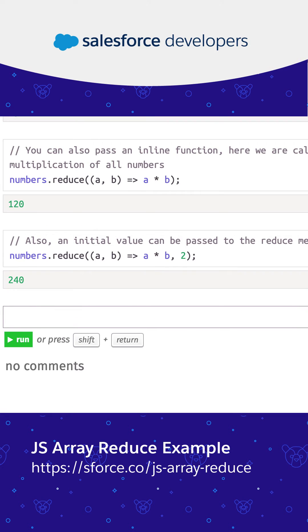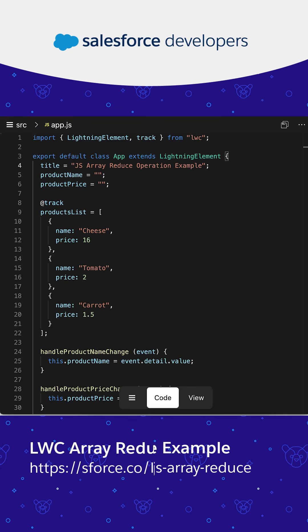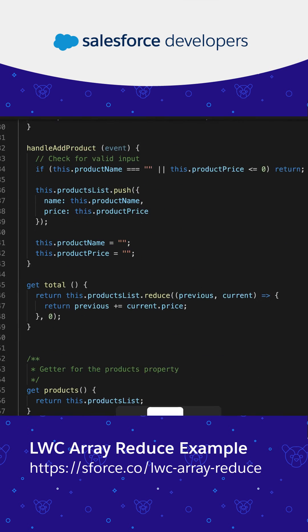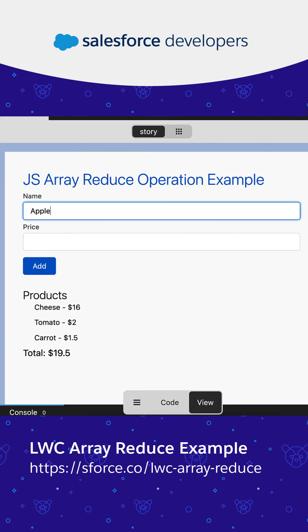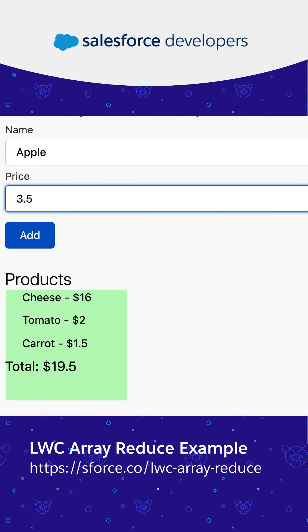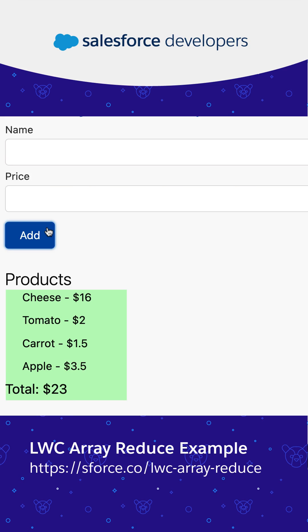Also, an initial value can be passed to the reduce method. In this LWC example, we are using the reduce operation to calculate the total price from a list of products.